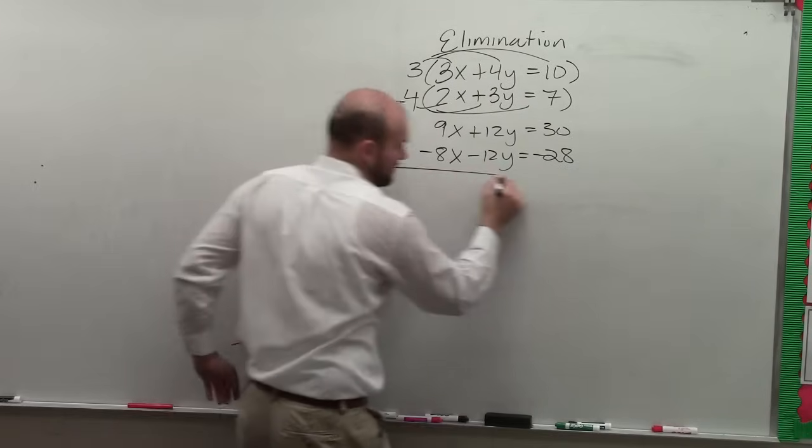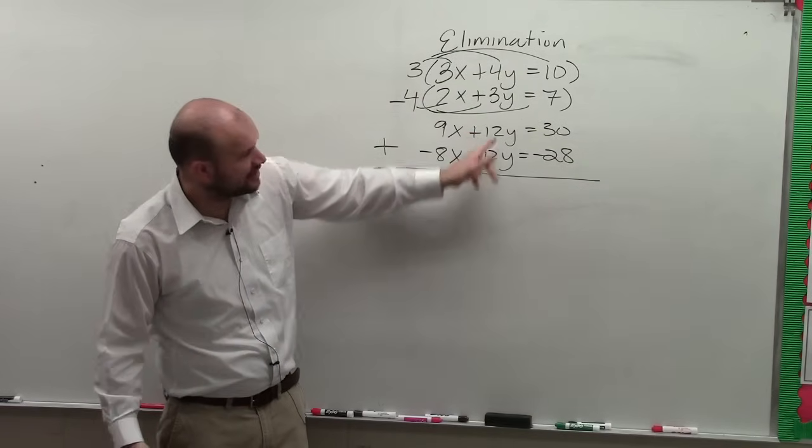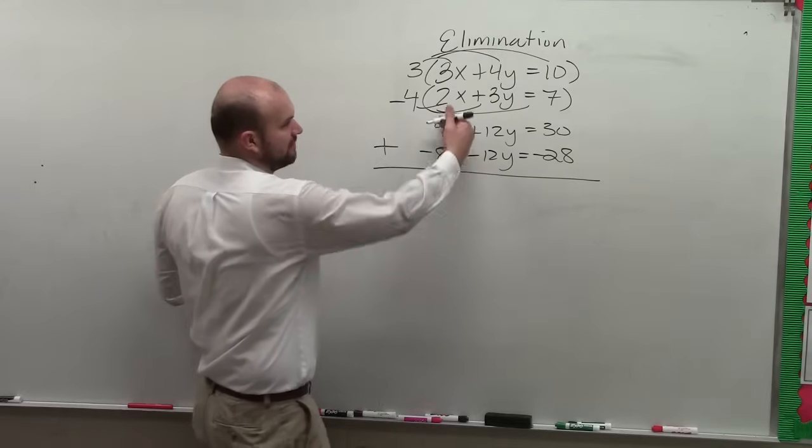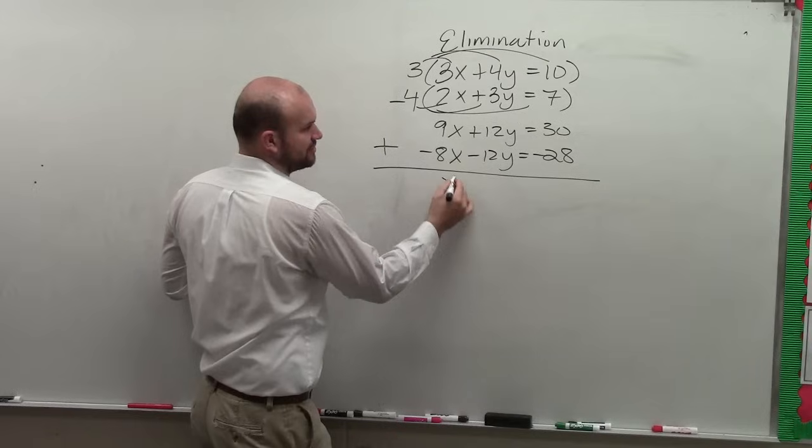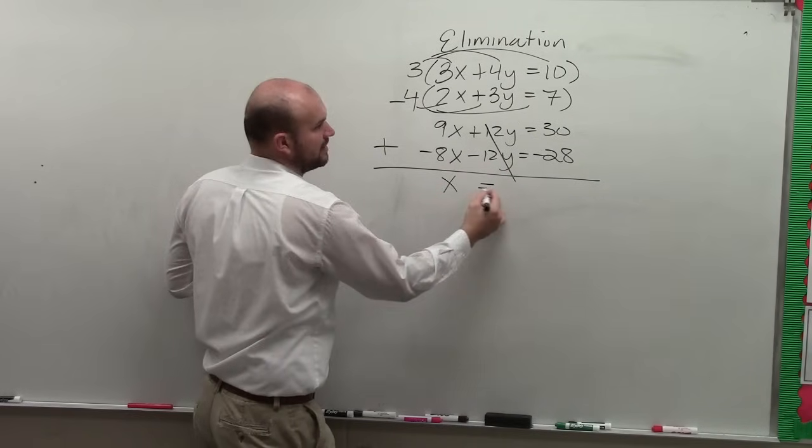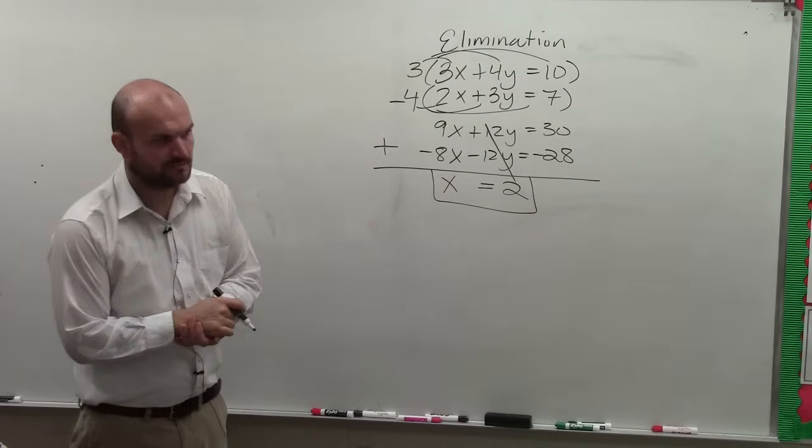Now I add them. All right, and I can add them because you can see these are exactly the same, one's positive, one's negative. So therefore 9 plus negative 8x is just going to be x. That goes to 0y which is just 0, equals 2. So now I got my answer.